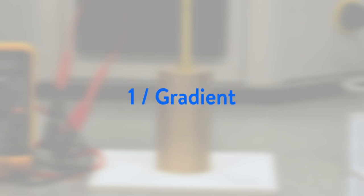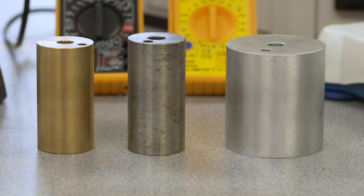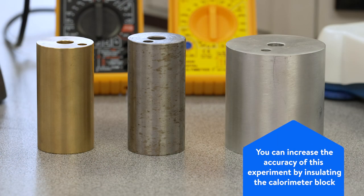The specific heat capacity of the brass block is calculated using the formula 1 divided by gradient. So therefore 1 divided by 0.002578 equals 387.89 joules per kilogram. You can increase the accuracy of this experiment by insulating the calorimeter block.